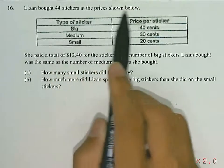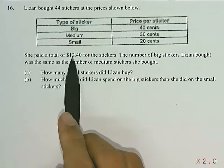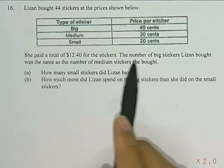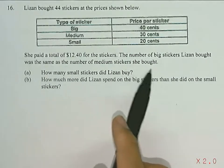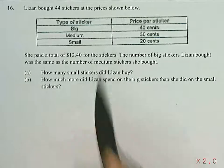Lizan bought 44 stickers at the prices shown below. She paid a total of $12.40 for the stickers. The number of big stickers that Lizan bought was the same as the number of medium stickers that she bought. Part A is asking how many small stickers did Lizan buy?